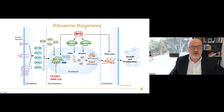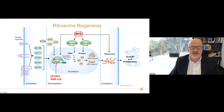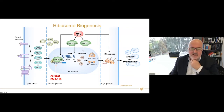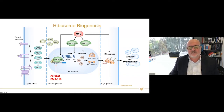Ribosome biogenesis is probably one of the most complex processes the cell undergoes. It uses a considerable amount of cellular energy and normally constitutes up to 60% of the total transcription in the cell. Growth factor signaling pathways directly regulate RNA polymerase 1, which is the enzyme dedicated to the synthesis of this large non-coding RNA — the 47S — which gives rise to the 5.8S, 28S, and 18S RNA. RNA polymerase 3 generates the 5S and RNA polymerase 2 generates the ribosomal proteins, which are assembled into the large and small subunits in the nucleolus and exported for translation. MYC is one of the most potent regulators of this pathway, sensitizing cells to drugs that directly inhibit the transcription and synthesis of ribosomal RNA.